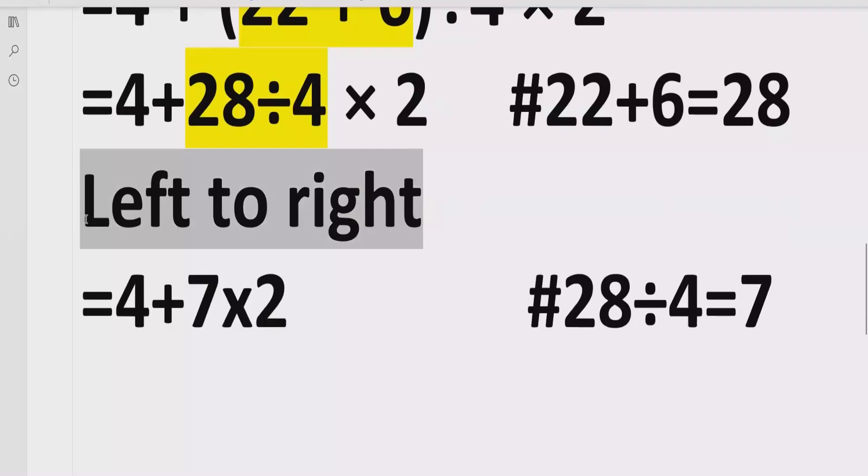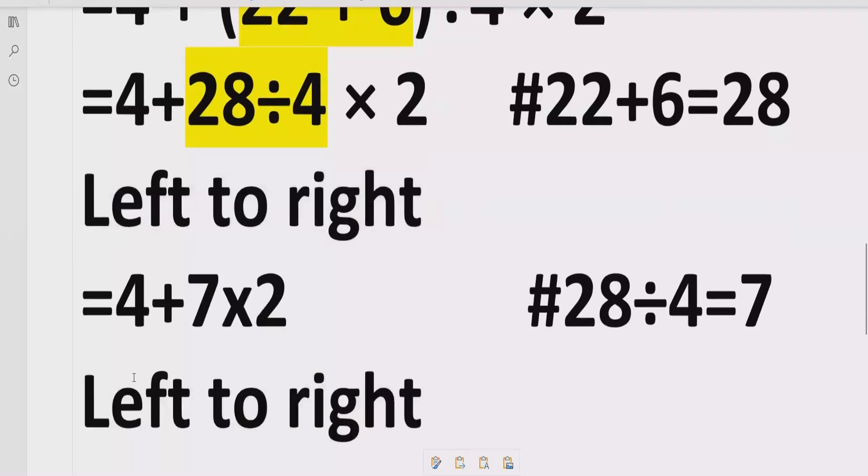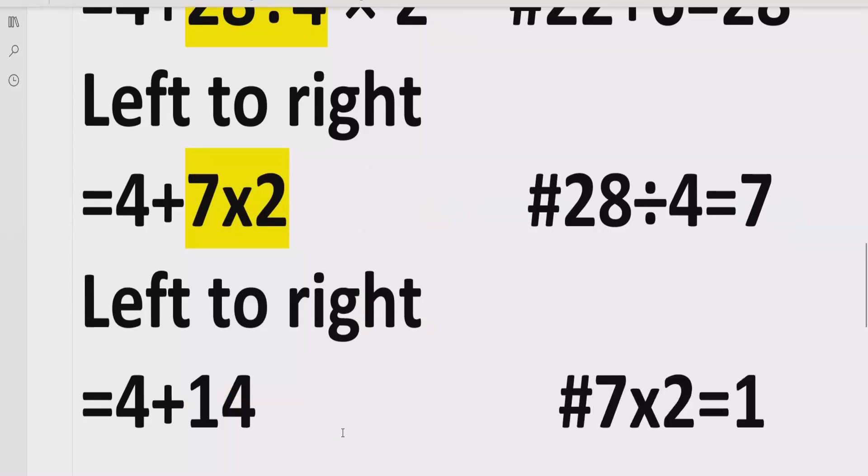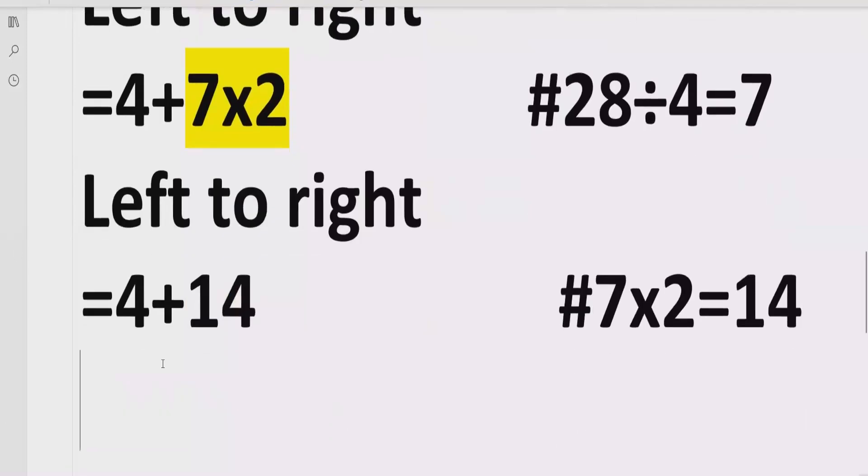Now, move forward again to left to right in our expression and find out multiplication and division. So now we have this multiplication which is 7 multiplied by 2 equals to 14. We will multiply these two terms, and we will give the reference here 7 times 2 equals 14.